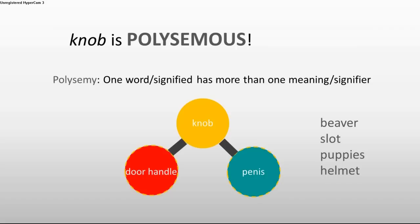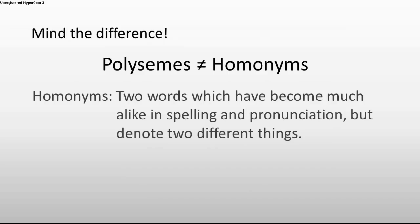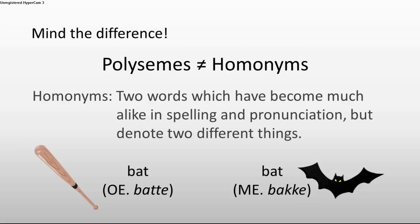You should bear in mind that polysemes are not the same as homonyms. Homonyms are two words which have become much alike in spelling and pronunciation, but denote two different things. These are two words with two different etymologies and language backgrounds which denote two different things. For instance, the word bat: one word comes from the Old English word bat and means something like a club. The other word bat comes from the Middle English word buck and means a mammal that is active at night, flies around, and sucks blood. They look alike, you spell and pronounce them the same way, but they come from different origins and denote different things.